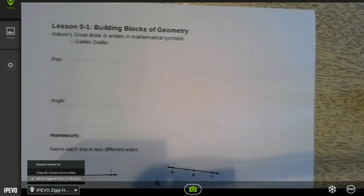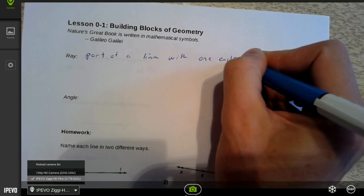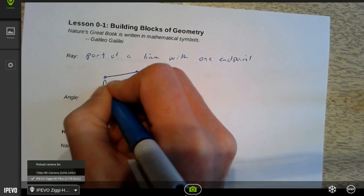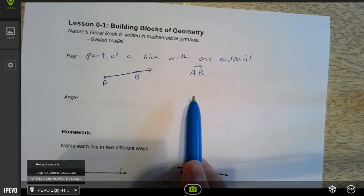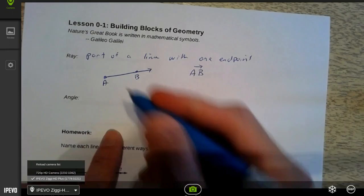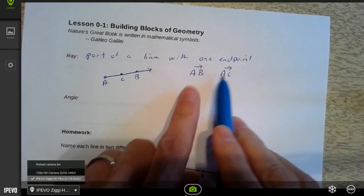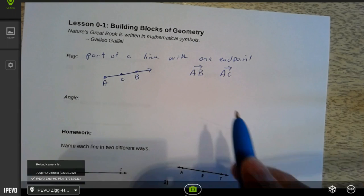Alright. So continuing on with some more definitions. A ray. A ray is part of a line with one endpoint. Now, the other point on the ray can be anywhere. It doesn't have to be at the arrow. In fact, often the arrow is not a point. That's something telling us that it's continuing on. So when I name my ray, I'm going to name this ray AB. We always name a ray. The first letter has to be the endpoint. That's important to us. If I had another point here, I could also call it ray AC. These two rays name the same thing, because the second letter just tells me that the line continues through there. The first letter must be the endpoint. Very important there.